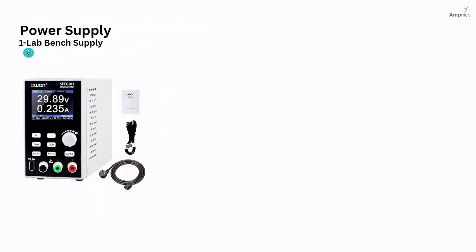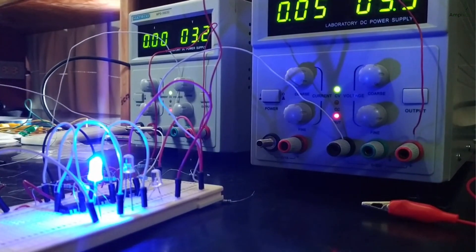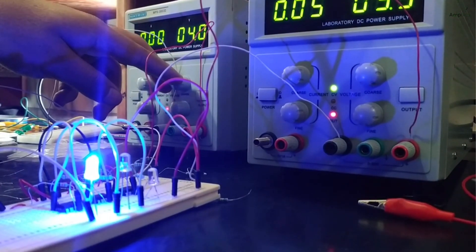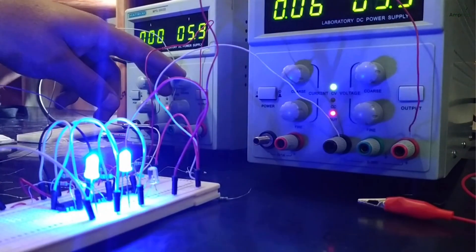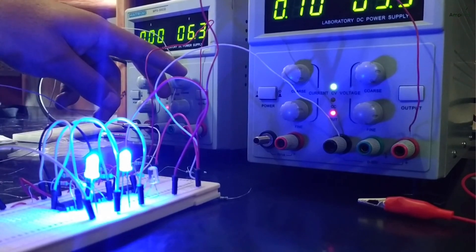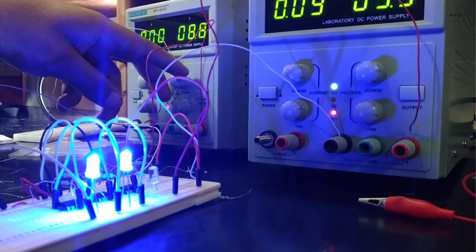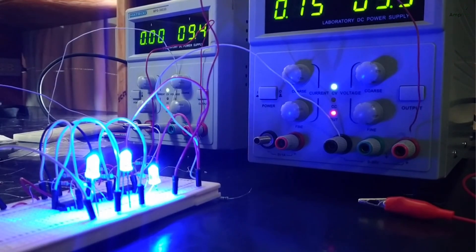Power supply. Number one: Lab Bench Power Supply. A lab bench power supply is a programmable device that provides adjustable regulated DC voltage and current for powering electronic circuits during testing and development. It provides clean and controlled power for prototypes or modules, lets us limit the current to prevent damage, and is essential for safely testing different voltage levels during product development.